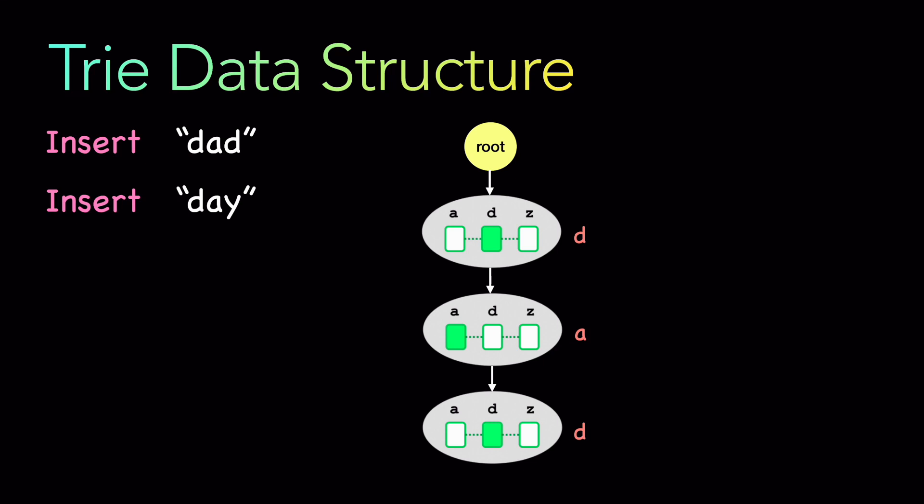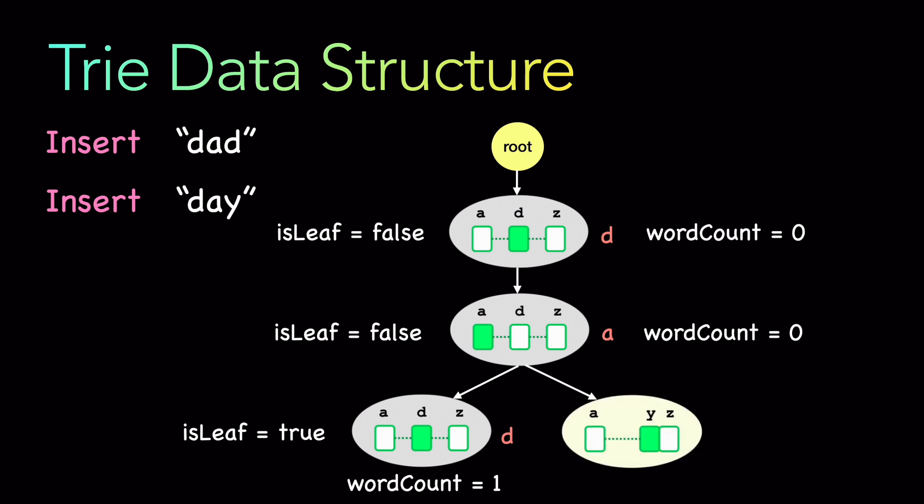Now let's insert 'day' on top of the existing tree that already has 'dad'. Notice that d and a are already there - 'dad' and 'day' share 'd' and 'a', so the only difference is the last character, which is y. We already have d and a, so we only need to insert y. After a, we insert another node and fill the position of y. Is this a leaf? Yes, and we mark its word count as one. So traversing the tree: d is not a word, 'da' is not a word, 'dad' is a leaf and a word, and 'day' - y is a leaf and a word from root.